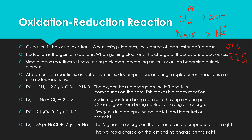Some reaction types are always going to be redox reactions — combustion reactions and single replacement reactions. For example, CH4 burning with oxygen to make CO2 and water is a classic combustion reaction. The oxygen is by itself in its elemental form — neutral — and then is in compounds on the right side, so it has changed its number of electrons. Combustion reactions are always going to be redox reactions.